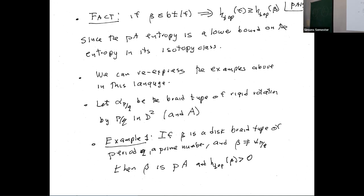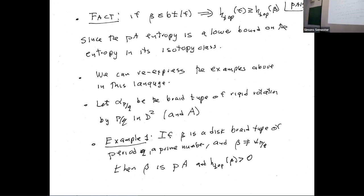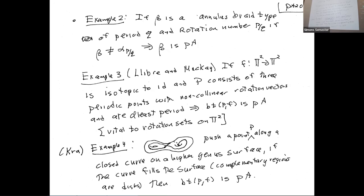Let's revisit previous examples with this language. The braid type of rigid rotation — that's the finite-order one. If we have a braid type in the disk of prime period and it's not the rigid-rotation braid type, then it's pseudo-Anosov with positive entropy. There's just one PQ braid type (P, Q relatively prime) with zero entropy; if a braid type differs from that, which we can tell by combinatorial means, then you have positive entropy, and more deeply you can get an explicit entropy estimate.